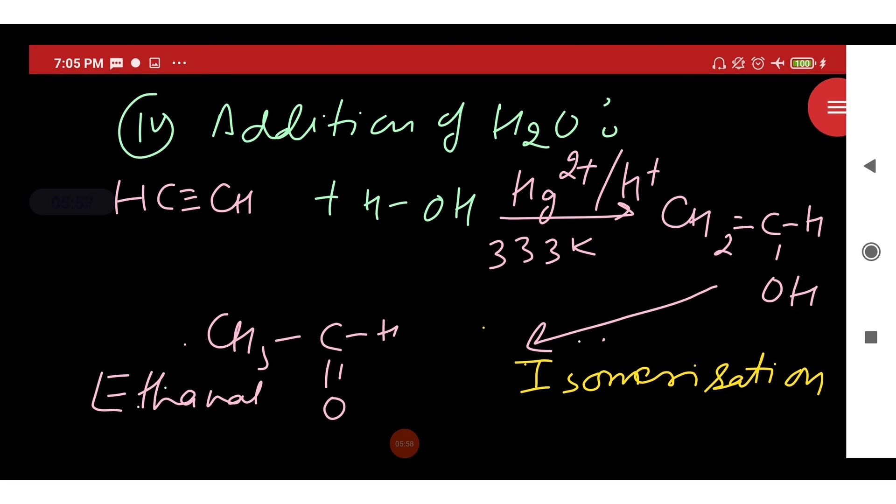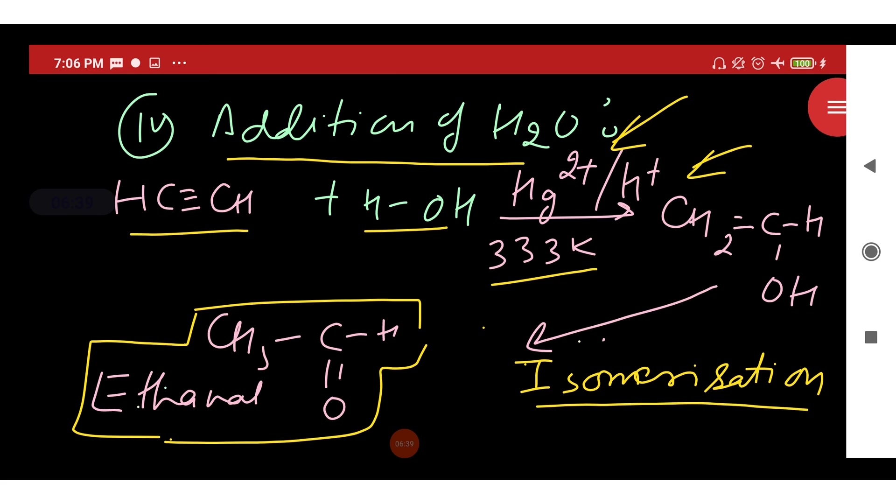Next is addition of water to alkyne. Like alkanes and alkenes, alkynes are also insoluble in water and so do not undergo reaction with water. However, when one molecule of water is warmed in the presence of mercuric sulfate and dilute sulfuric acid at 333 Kelvin, then alkyne undergoes reaction to form carbonyl compound called ethanal, which is formed as a result of isomerization of this intermediate product.